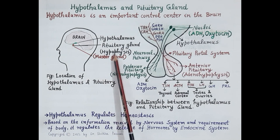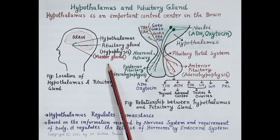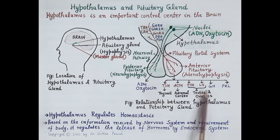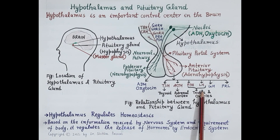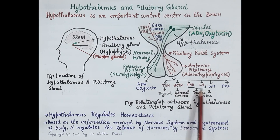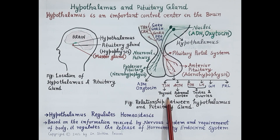Pituitary gland is called as the master gland — this is a very important question often asked in university exams. Anterior pituitary produces six hormones, of which four are tropic hormones: TSH, ACTH, FSH, and LH. They are termed tropic because they control secretion of other endocrine glands. TSH (thyroid stimulating hormone) controls the thyroid gland, stimulating it to produce T3 (triiodothyronine) and T4 (thyroxine). ACTH (adrenocorticotropic hormone) stimulates the adrenal cortex to produce steroidal hormones.